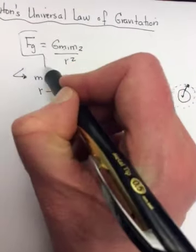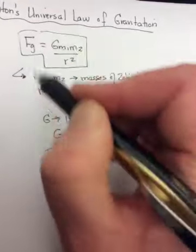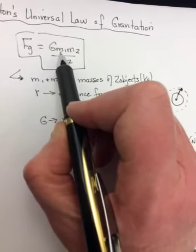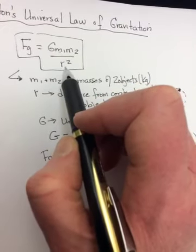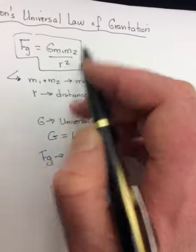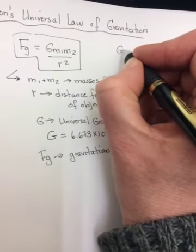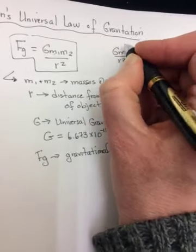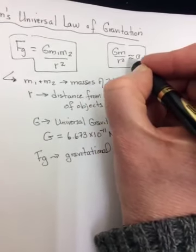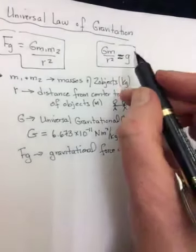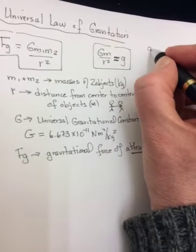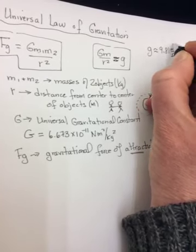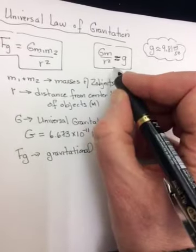So up until now, we've used a simplified version of this. Because if you're at or near the surface of the Earth, then one of these m's will be the mass of the Earth, and the r will be the radius of the Earth. And so the G m over r squared, we replace with little g. At or near the surface of the Earth, g is equal to 9.81 meters per second squared. And if you remember, we did this in class earlier in the semester.